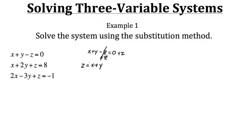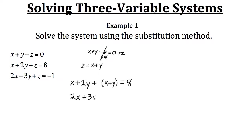Since we got this from equation one, let's plug it into equations two and three. In the second equation, x plus two y plus z, we substitute z with x plus y, and that equals eight. Simplifying: x plus x gives us two x, and two y plus y gives us three y, so our new second equation is two x plus three y equals eight.